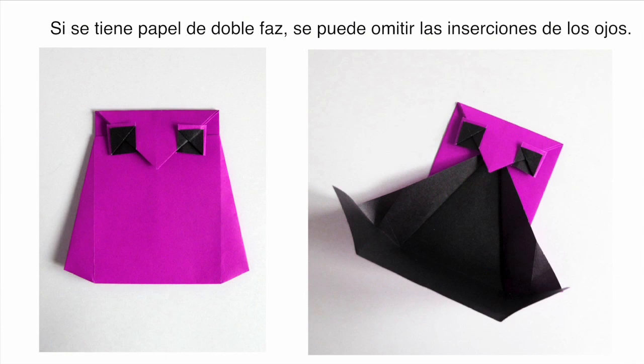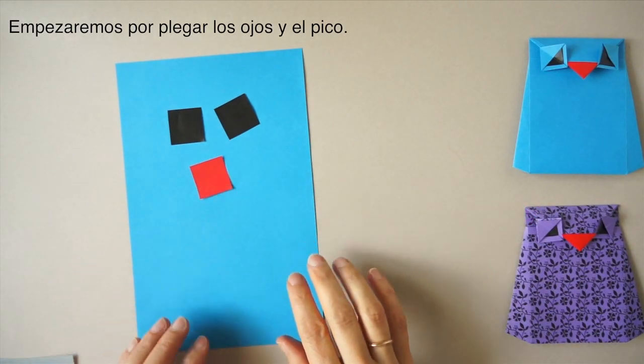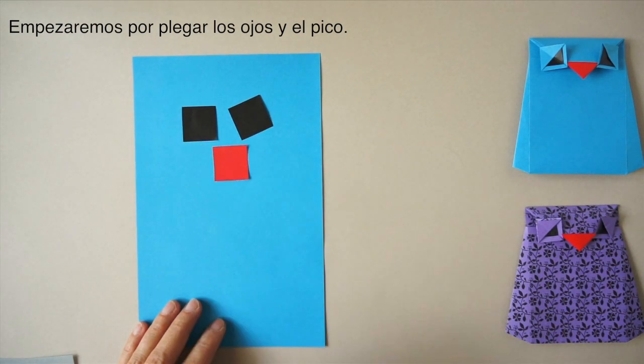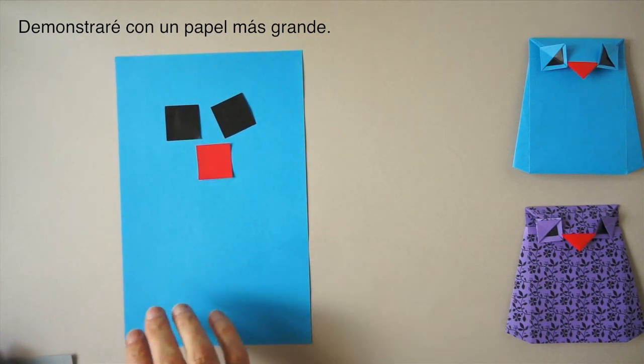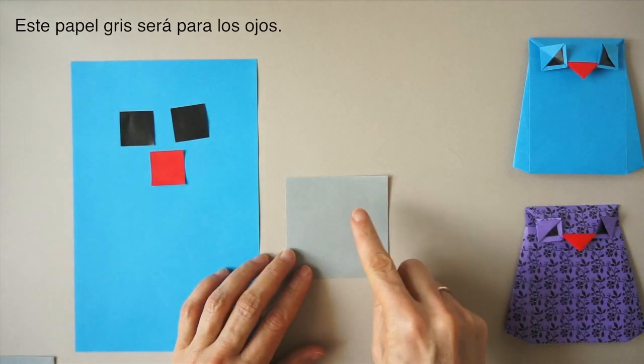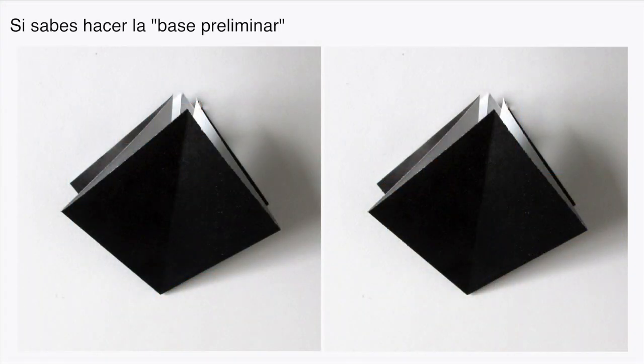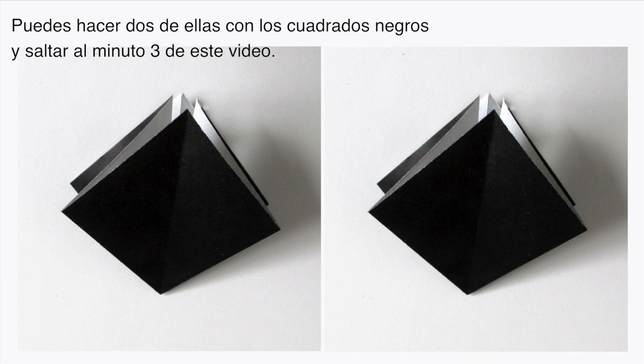If we have dual color paper, we can omit the inserts for the eyes. We are going to begin by folding the eyes and the beak. I am going to demonstrate that using bigger pieces of paper. This gray paper will be for the eyes. If you are familiar with the preliminary base, make yourself 2 with smaller pieces of paper and skip to about minute 3.